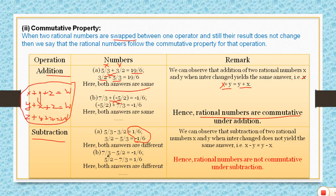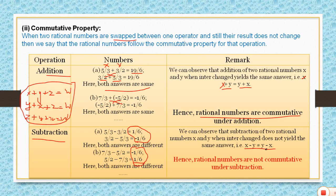Another example: 7 by 3 minus 5 by 2 gives minus 1 by 6. After swapping positions, 5 by 2 minus 7 by 3 gives 1 by 6. Both answers are different. So rational numbers do not follow commutative property under subtraction — x minus y is not equal to y minus x.